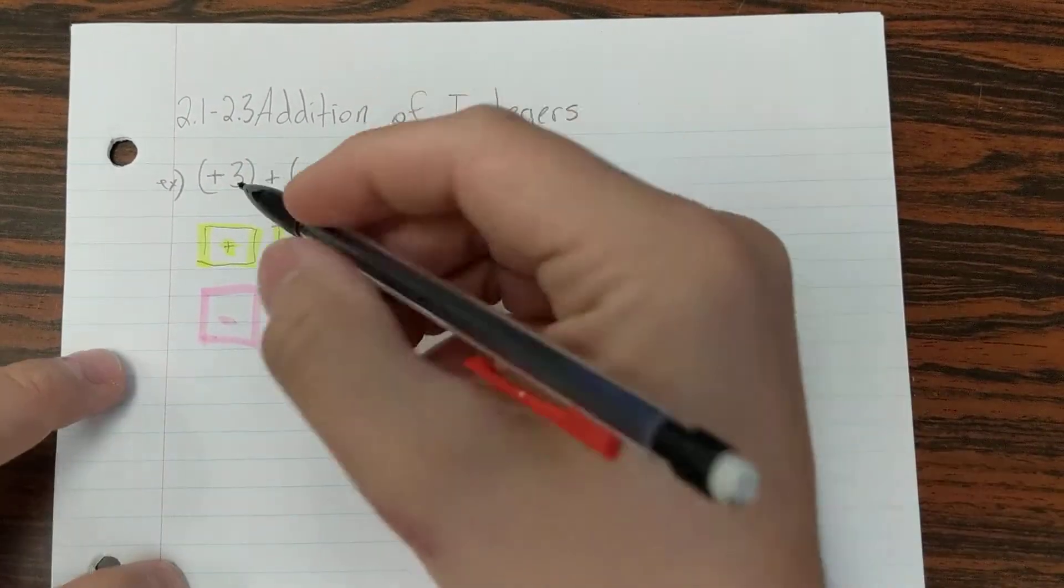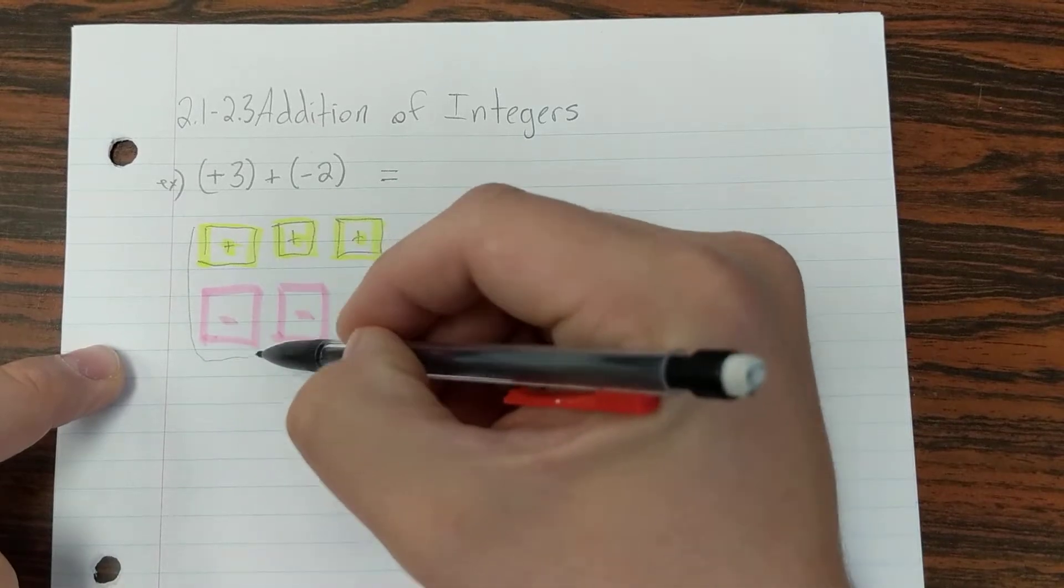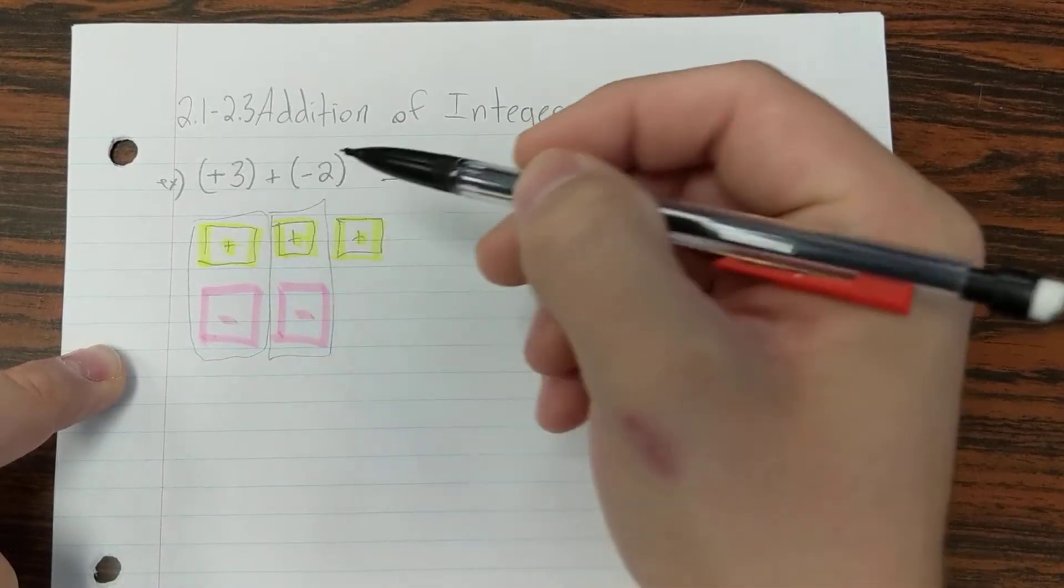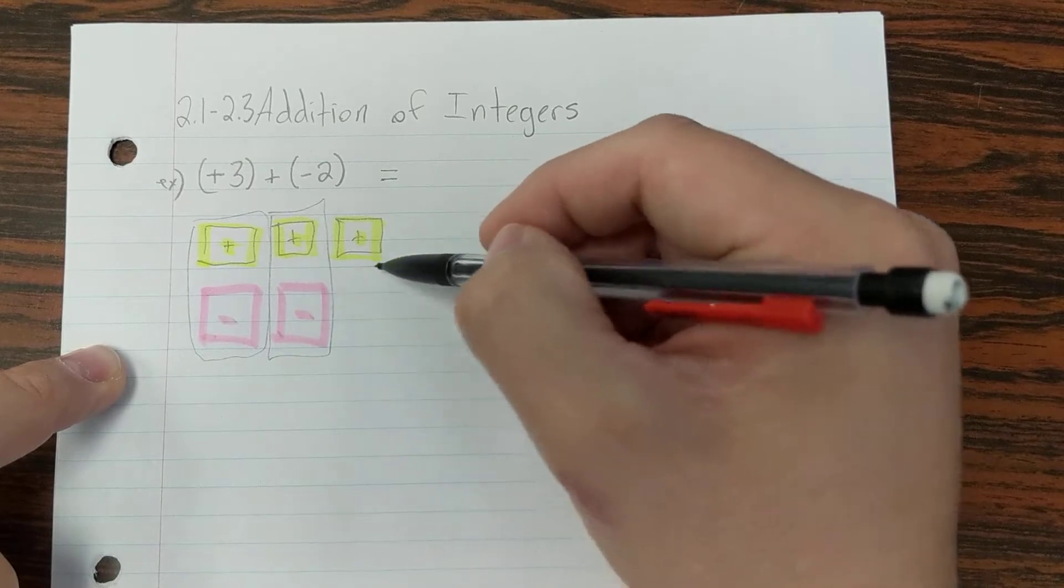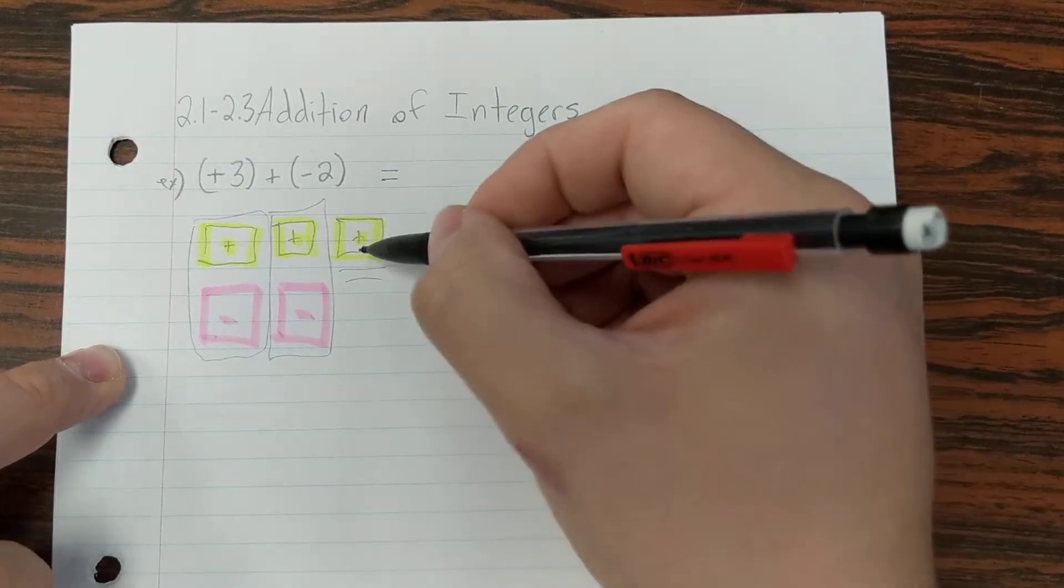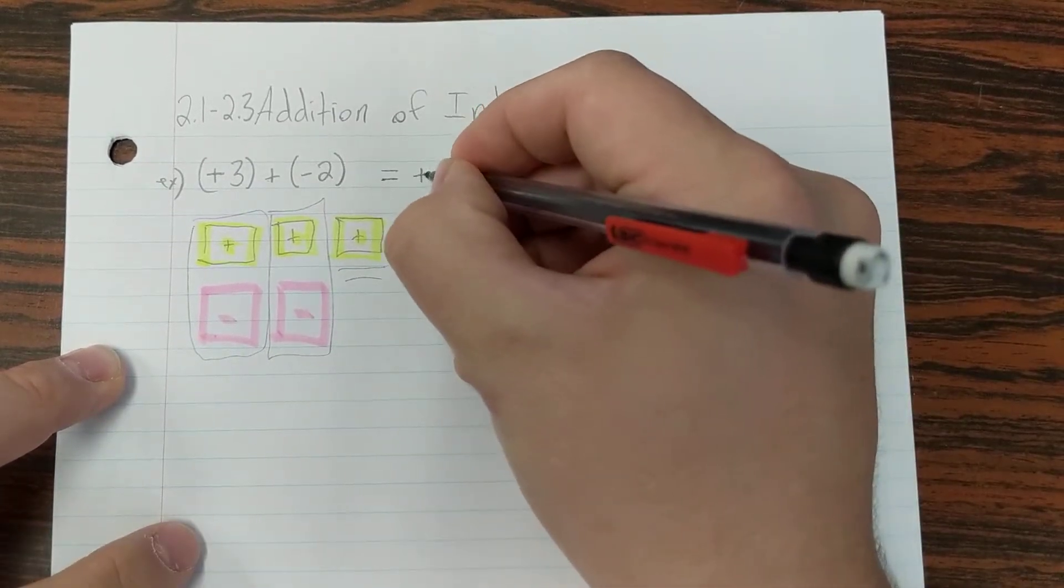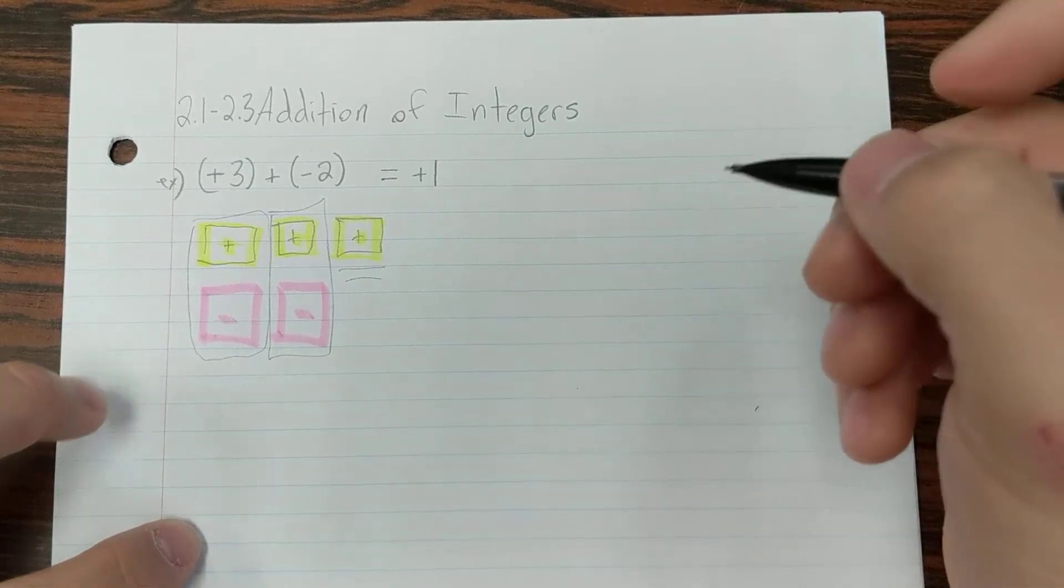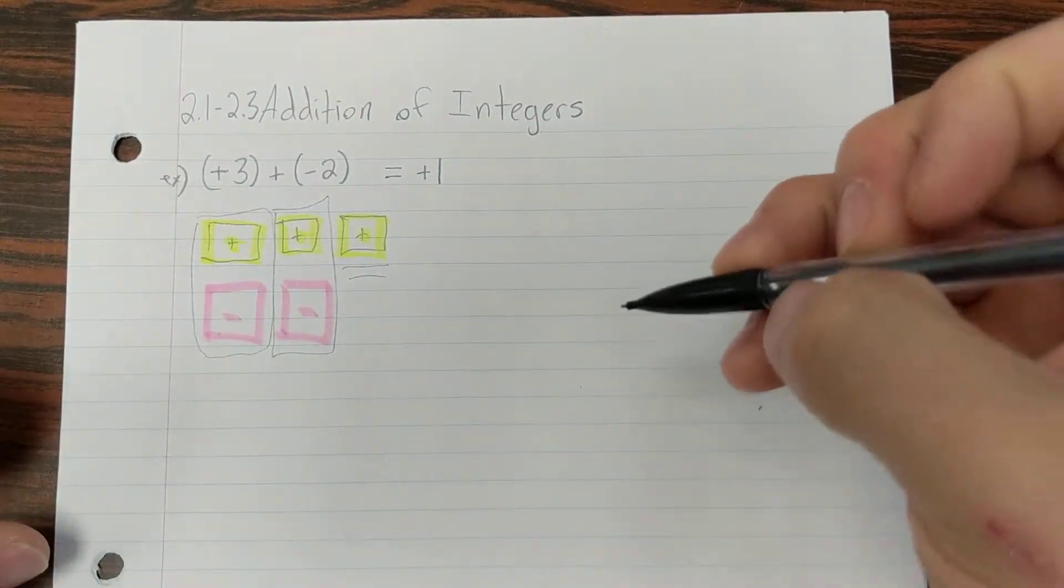If we think about it, two opposite integers, they just equal zero. And what's left over? Just one positive, so the answer would be positive one. That's how you could use tiles to solve a question like this.